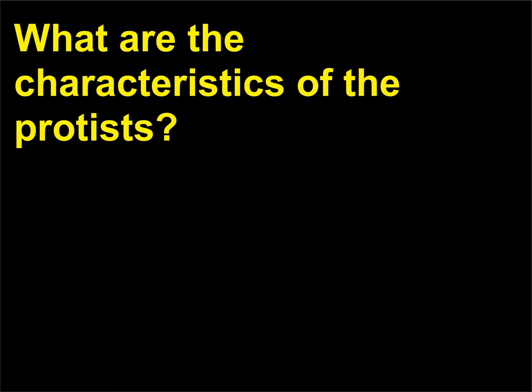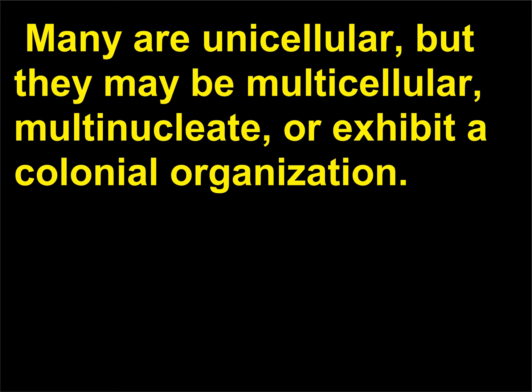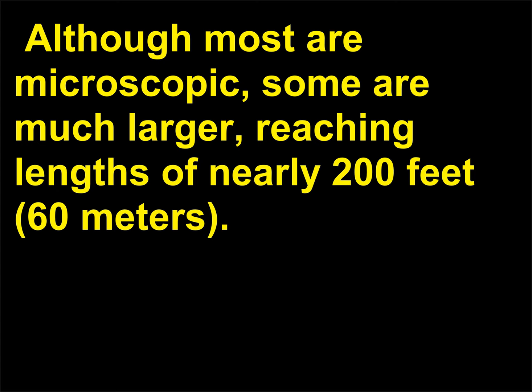What are the characteristics of protists? Protists are a diverse group of organisms. All protists are eukaryotic. Many are unicellular, but they may be multicellular, multinucleate, or exhibit a colonial organization. Although most are microscopic, some are much larger, reaching lengths of nearly 200 feet, 60 meters.